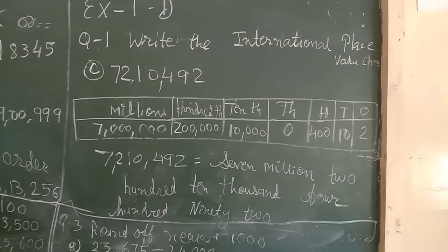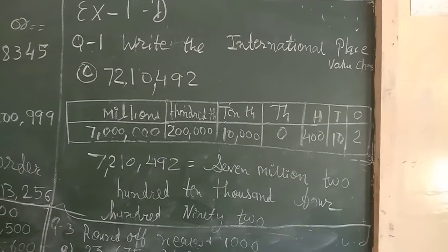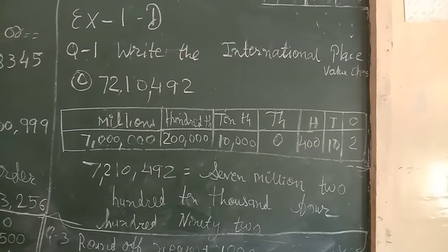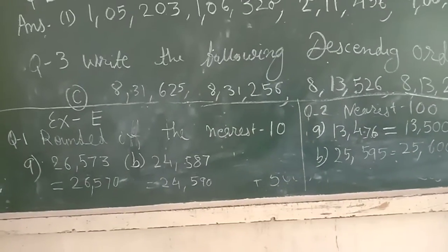Also write down the numbers' names by international. Other numbers completed. Exercise E: Round off the nearest ten.